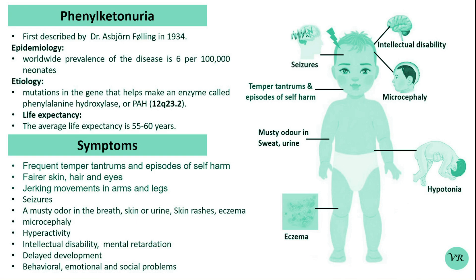Kuvan (sapropterin dihydrochloride) is a medicine that helps some people with PKU process Phenylalanine more effectively by enhancing the activity of the enzyme Phenylalanine hydroxylase. It is not effective for everyone with PKU, but it may reduce the need for strict dietary restriction in some cases.